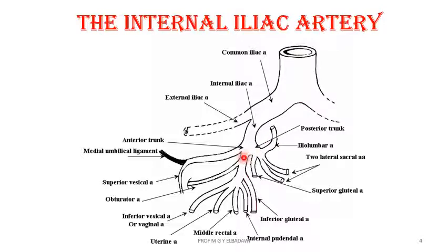The anterior division gives two sets of branches: parietal and visceral. The parietal branches are the inferior gluteal, the internal pudendal, and the obturator arteries — these are the three parietal branches.